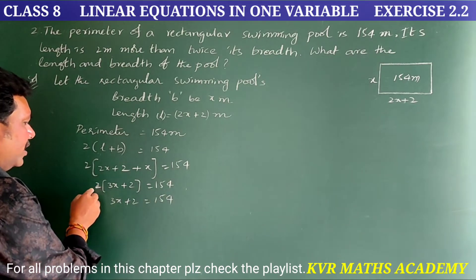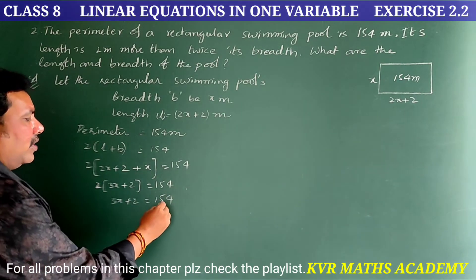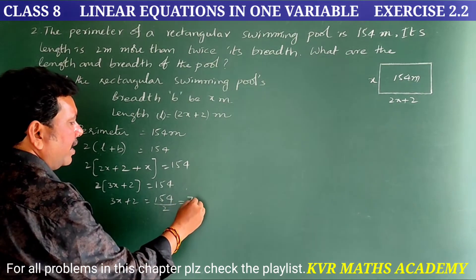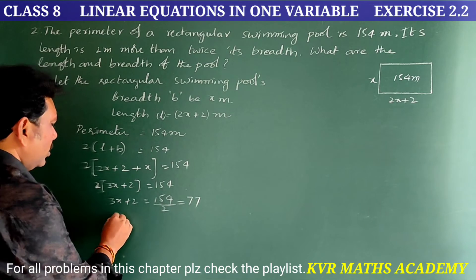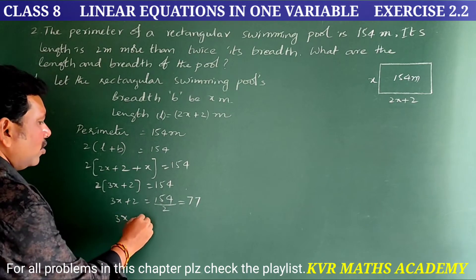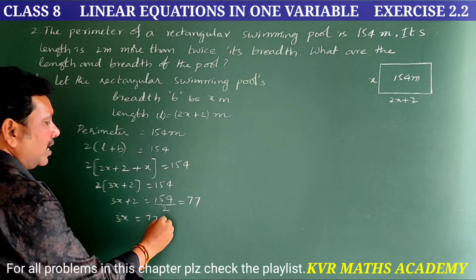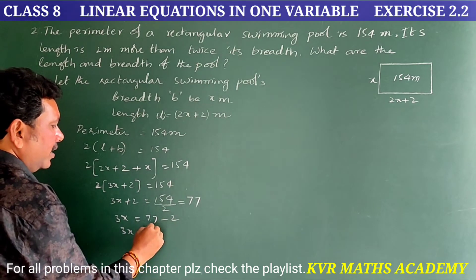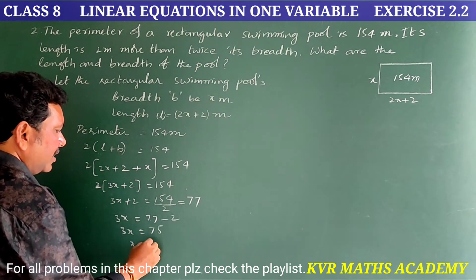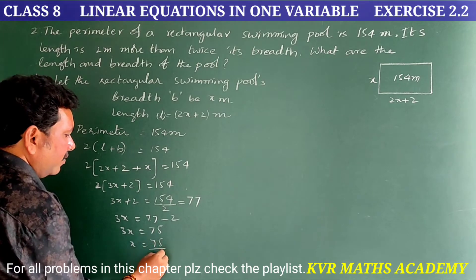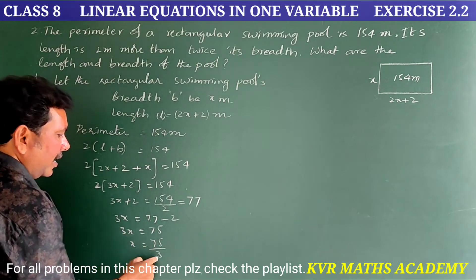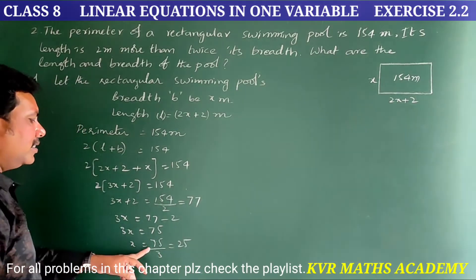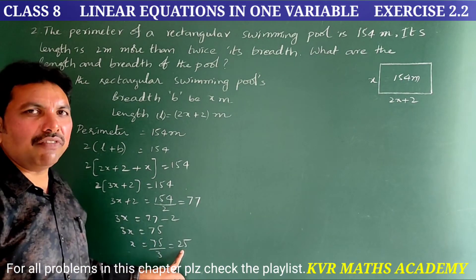Dividing both sides by 2 gives 3x + 2 = 77. Transferring 2 to the other side: 3x = 77 − 2 = 75. Then x = 75 ÷ 3, which gives x = 25.